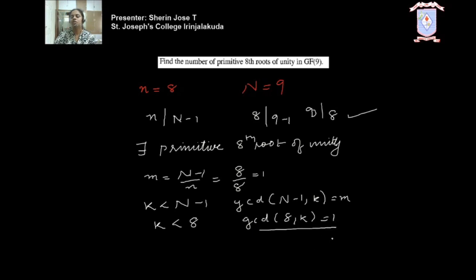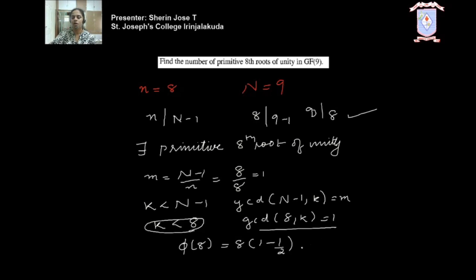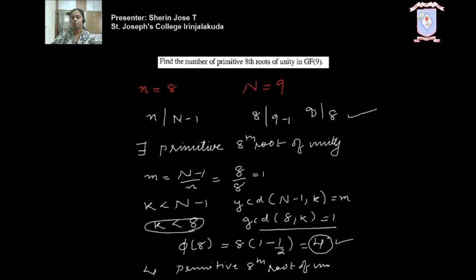Since m equals 1, we need integers k less than 8 such that gcd(8, k) equals 1 — meaning numbers relatively prime to 8. You can easily find these using the formula phi(8), which equals 8 times (1 minus 1/2), equal to 4. So there are 4 numbers less than 8 that are relatively prime to 8. This means there are 4 primitive 8th roots of unity in GF(9). The answer is 4.